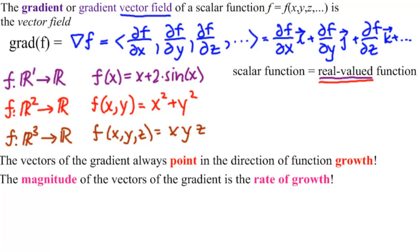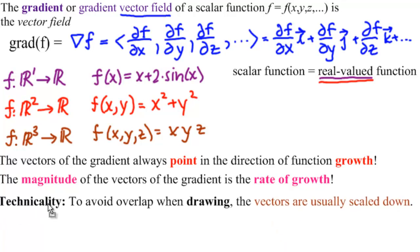There is a technicality when you try to draw a vector field, the vectors start to overlap each other. They have greater magnitude than the distance between the ones you're drawing.